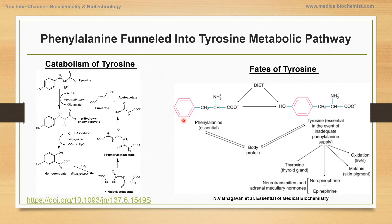Once phenylalanine is converted into tyrosine, it enters the metabolic pathway of tyrosine metabolism, which includes the catabolism of tyrosine — its conversion into acetoacetate and fumarate by a series of chemical reactions. Additionally, phenylalanine and tyrosine enter other important metabolic pathways: incorporation into proteins, conversion of tyrosine into thyroxine or thyroid hormone, synthesis of neurotransmitters such as norepinephrine and epinephrine, melanin for skin pigmentation, and oxidation in the liver.